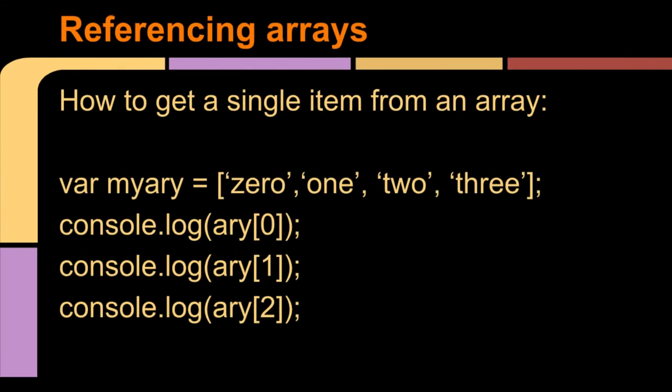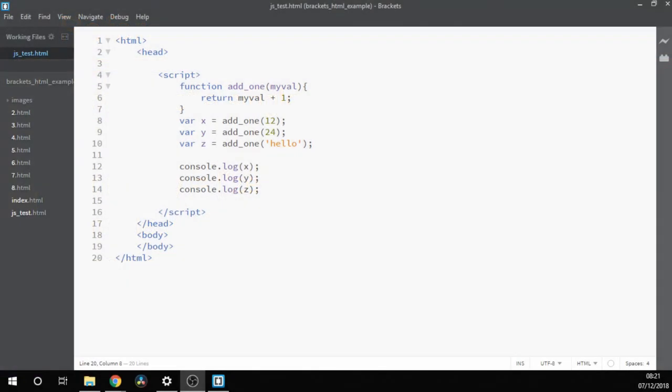In JavaScript, arrays are what are called zero-based, meaning that in fact, to get the first item, you use an index that is not one, it is in fact, zero. So here's an example of that. We have my array of zero, one, two, three, all strings. And we can do console.log of array square bracket zero, and that will grab only the first element of the item. And then the second element can be referenced by using one as the index. And the third element is two, and so on and so forth.